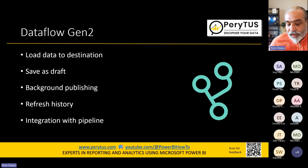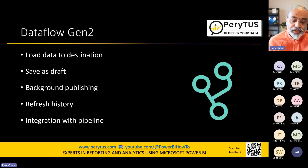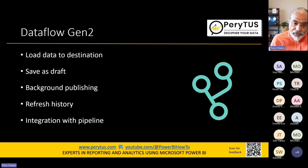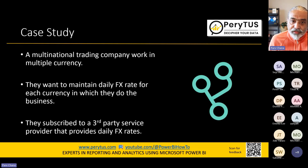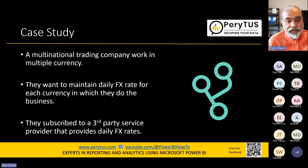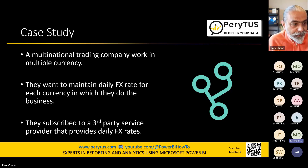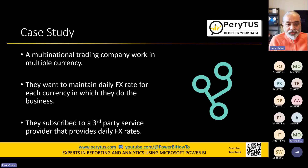If you don't know what pipelines are — think of Azure Data Factory or SSIS for ETL. That's what the pipeline brings in Fabric. From the five Gen 2 improvements, if I had to order them: number one is data destination, number two is pipeline integration, then background publishing, save as draft, and improved refresh history.